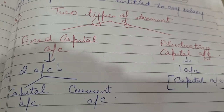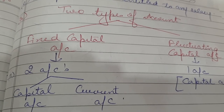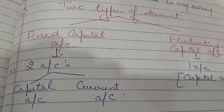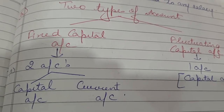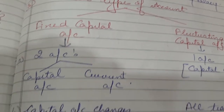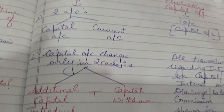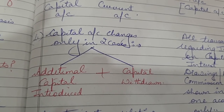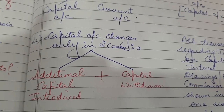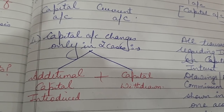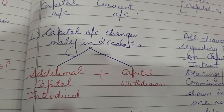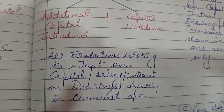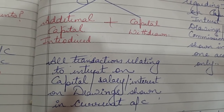There are two types of accounts in partnership: fixed capital account and fluctuating capital account. In case of fixed capital account, there are two accounts — capital account and current account. In case of fluctuating capital, there is only one account — the capital account. In fixed capital, the capital account changes only in two cases: when additional capital is introduced, and when capital is withdrawn.